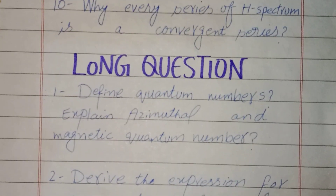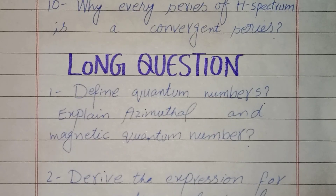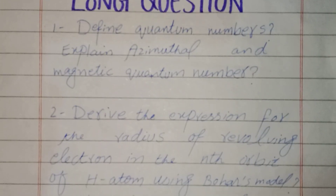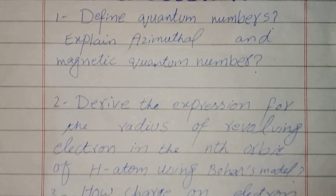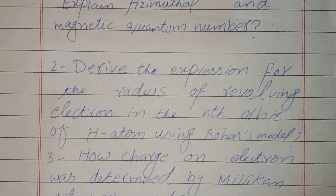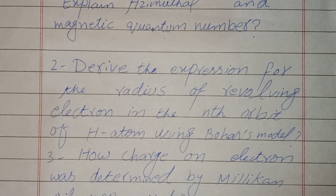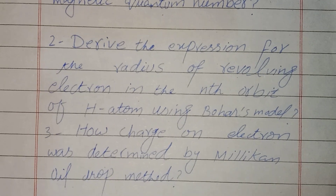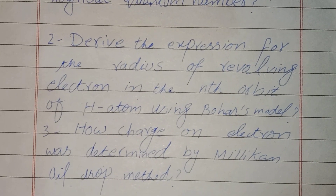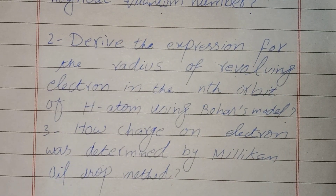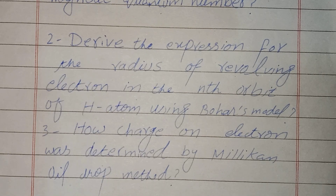Long questions: define quantum number, explain azimuthal and magnetic quantum numbers. Derive the expression for the radius of a revolving electron in the nth orbit of the hydrogen atom using Bohr's model. How was the charge of an electron determined by Millikan's oil drop method?